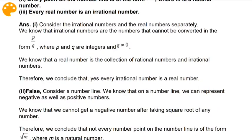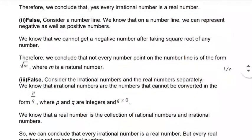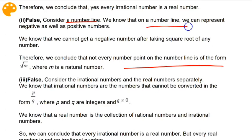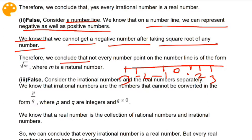Now question number two: every point on the number line is of the form √m, where m is a natural number. The answer is false. Consider a number line — we know that the number line can represent negative as well as positive numbers. On the right side of zero are all positive numbers, and on the left side are negative numbers. We know that we cannot get a negative number after taking the square root of any number. Therefore we conclude that every point on the number line is not of the form √m where m is a natural number. The answer is false.